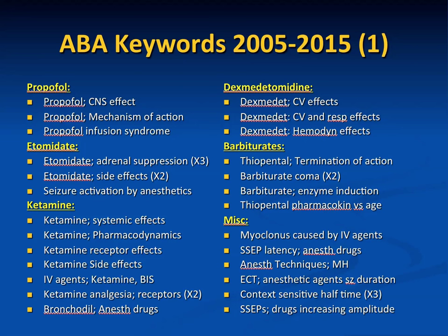Miscellaneous topics include myoclonus, effect of IV anesthetics on SSEPs, malignant hyperthermia and what drugs trigger it — specifically inhaled volatile anesthetics and succinylcholine, not our intravenous anesthetics. ECT or electroconvulsive therapy: propofol decreases seizure duration significantly. Context-sensitive half-time refers to how long it takes for a drug's concentration to decrease by half after stopping an infusion. Etomidate and ketamine are the two drugs that increase SSEP amplitude.